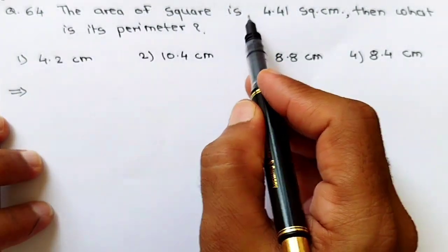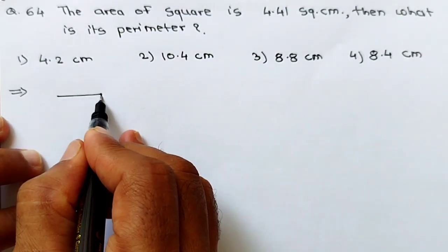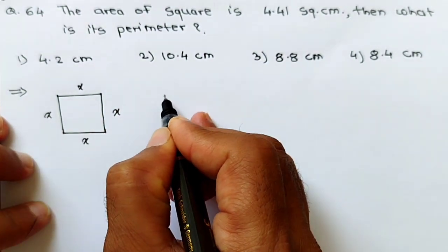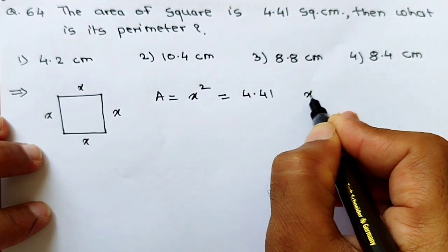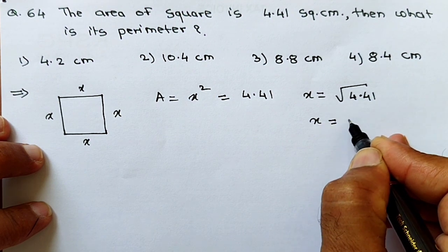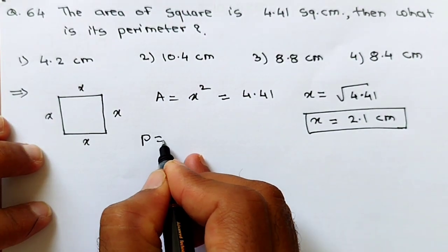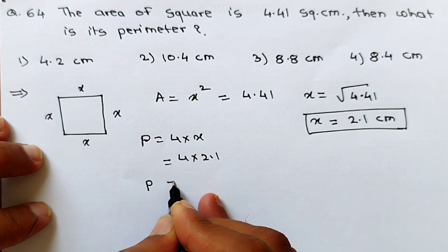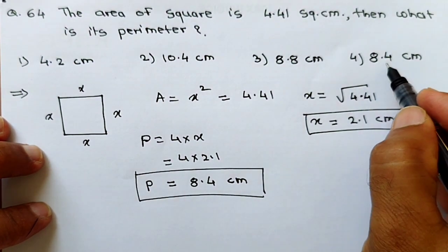See question number 64. The area of a square is 4.41 square centimeters. Then what is its perimeter? Very simple. All sides of a square are equal; let each side be x. Area equals x squared equals 4.41, so x equals square root of 4.41, which is 2.1 centimeters. Perimeter equals 4 into x equals 4 into 2.1 equals 8.4 centimeters. That is the fourth option — a very simple problem.